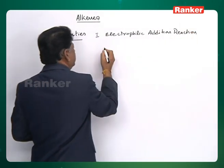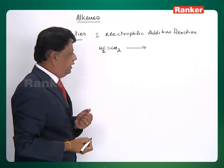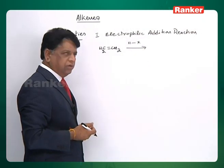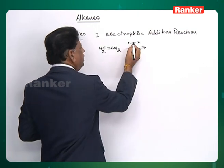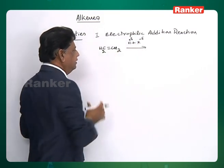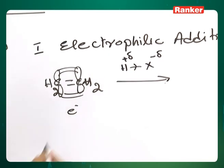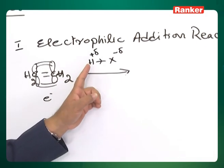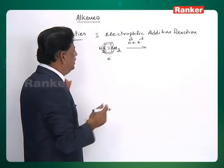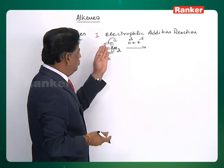In the electrophilic addition reaction, if I take ethylene as a simple example to explain the mechanism, we can take HX. If X is a more electronegative element like halogen, the bond is already polarized to delta-plus and delta-minus. As such a system comes nearer to ethylene — which has a loose pi bond with available electrons — the positive nature on hydrogen and the electron density on ethylene create attraction. As hydrogen comes closer and closer, the attraction increases and the pi bond opens.